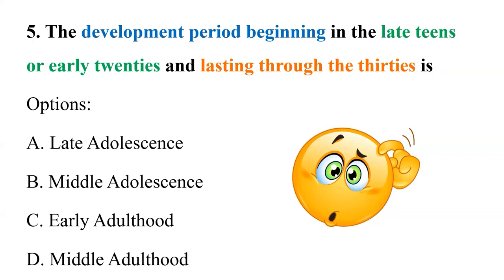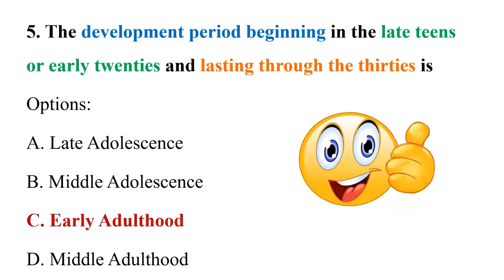Coming back to our question about the period beginning in the late teens or early 20s and lasting through the 30s: after reviewing all periods of development, the correct answer is option C — early adulthood — which lasts from the early 20s to the late 30s or beginning of 40s.